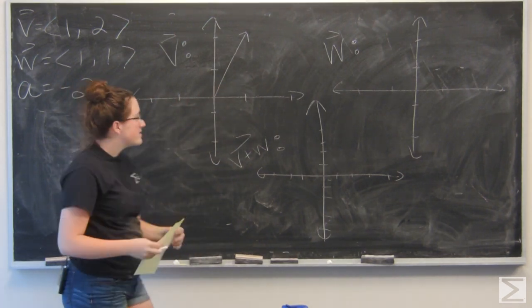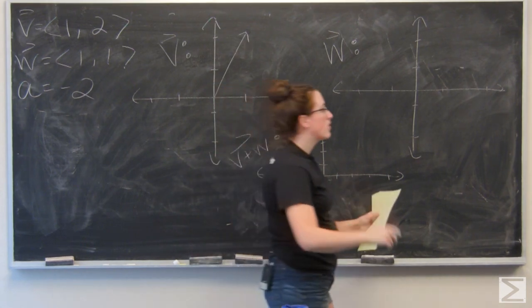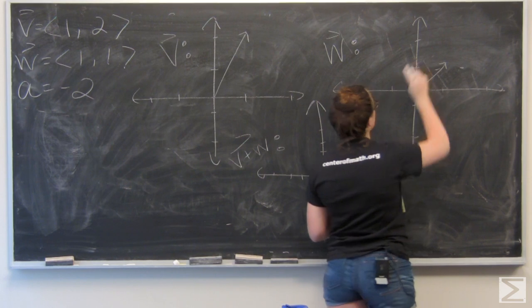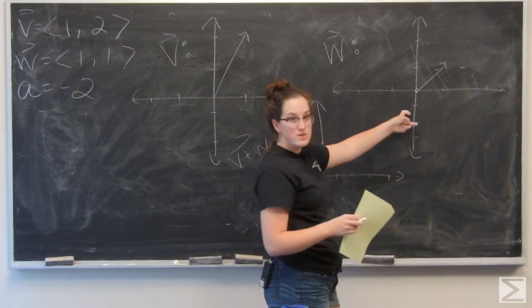And then w is the vector (1, 1). So I just want to go one unit in the x direction, and one unit up in the y direction. So that's what w looks like.